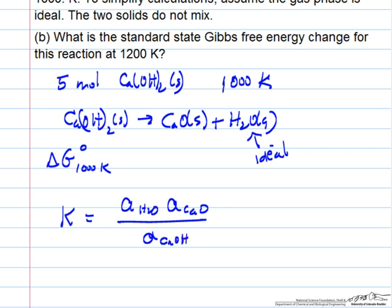Now the activity is the ratio of fugacities, fugacity in the system over fugacity of pure material, and the activity of water then would be fugacity of water in the gas phase over fugacity of water at standard conditions, which is 1 bar ideal gas.